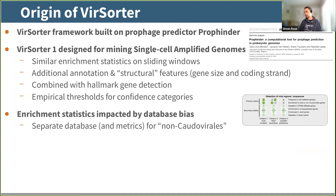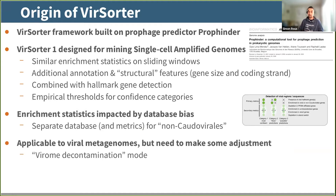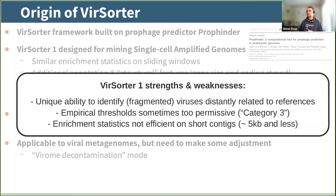We also realized we could apply the same approach to clean viral metagenomes and remove microbial contamination, though this required a few adjustments, leading to the viral decontamination mode in VSorder1. But VSorder1 had limitations: it was really good at finding even fragments of viruses distantly related to references, but had empirical thresholds that were sometimes too permissive — especially for category three predictions. And because it was all based on enrichment statistics, it was not efficient on short contigs — anything less than 10 kb, especially 5 kb, was not well handled.